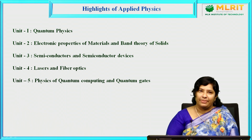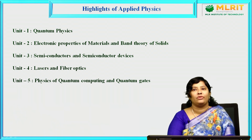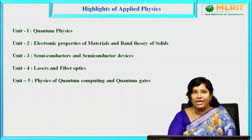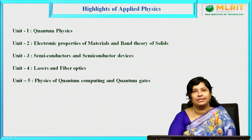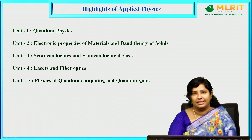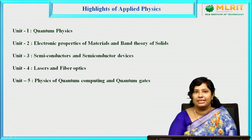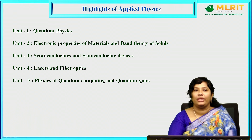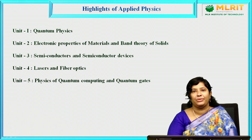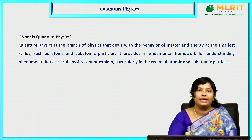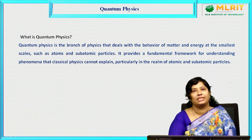The highlights of this applied physics paper are: Unit 1 covers quantum physics; Unit 2, electronic properties of materials and band theory of solids; Unit 3, semiconductors and semiconductor devices; Unit 4, lasers and fiber optics; and Unit 5, physics of quantum computing and quantum gates. Let us now discuss what is quantum physics.